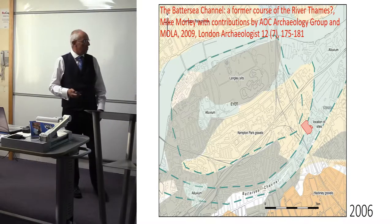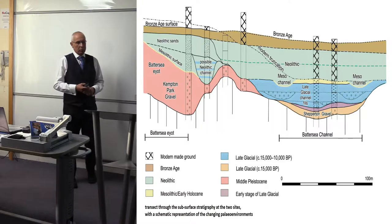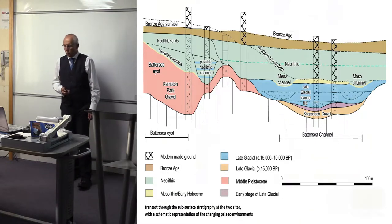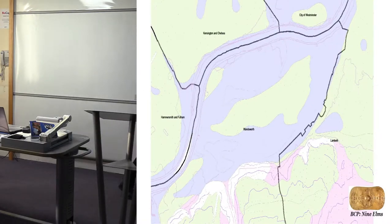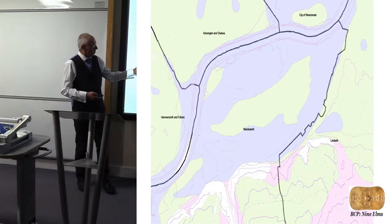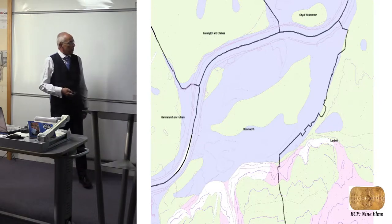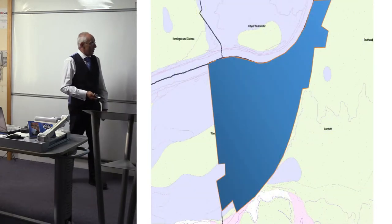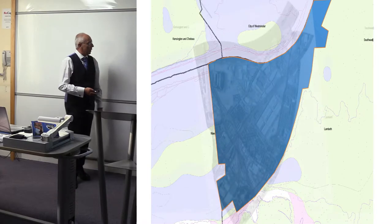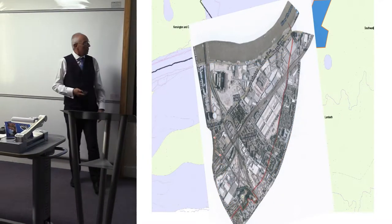The growth area we're looking at is the Vauxhall Nine Elms area. As recently as 2006, a site being developed here gave an opportunity to investigate a relic channel that was part of the Thames, to understand its potential for archaeology, and to produce a sequence from the site's information. That really flagged up the potential of the Bassy Channel for archaeological information, and in fact it was through this piece of work that the term 'Bassy Channel' was coined. This large area to the south — with Battersea Park up against the Thames — represents a significant area of archaeological and geoarchaeological potential.